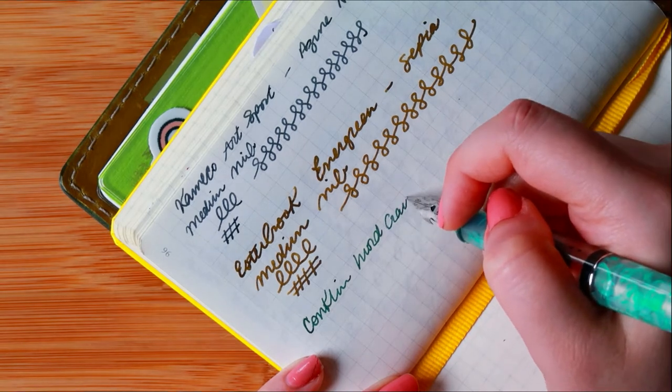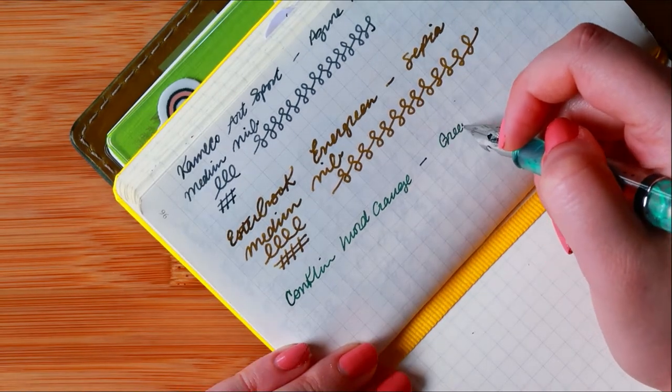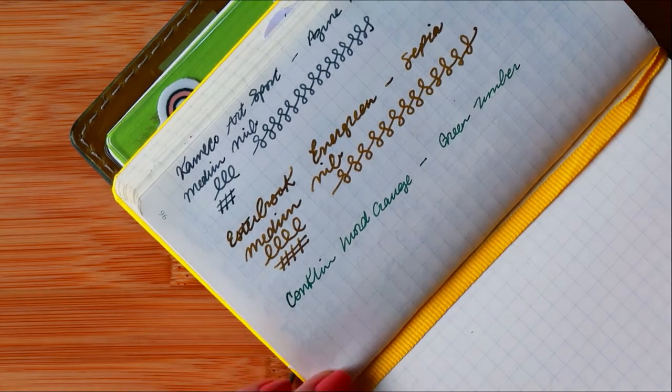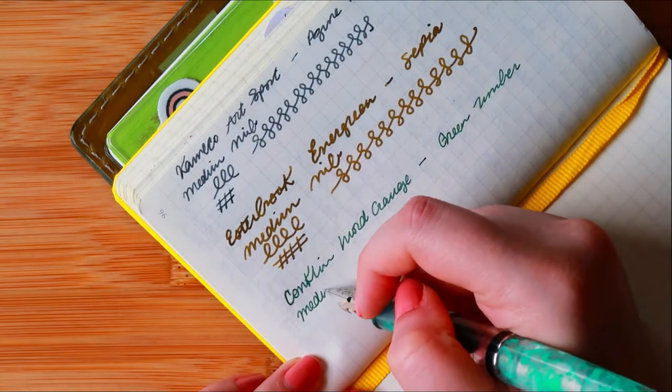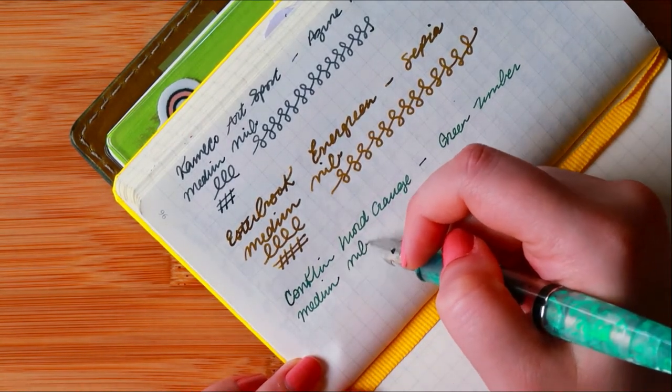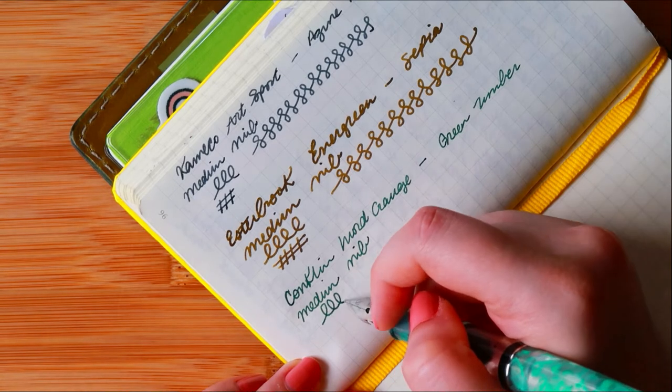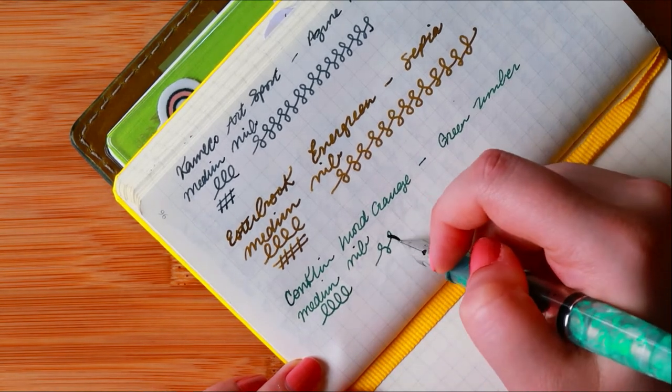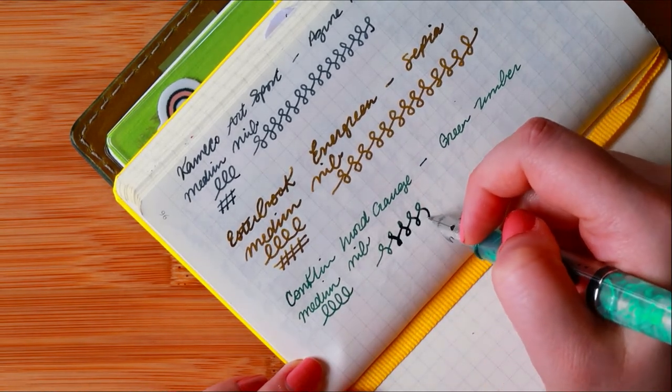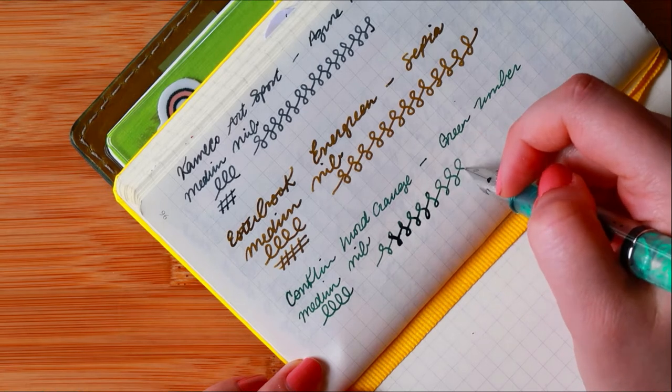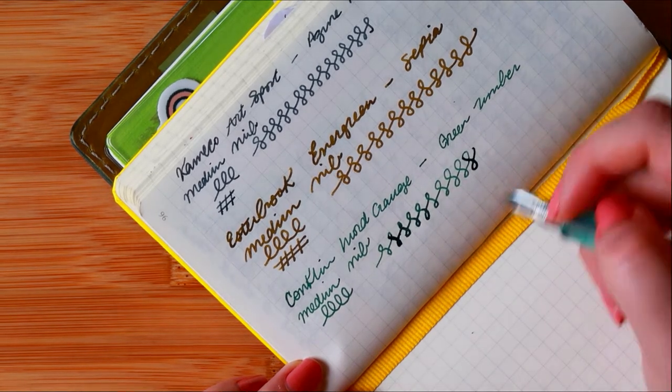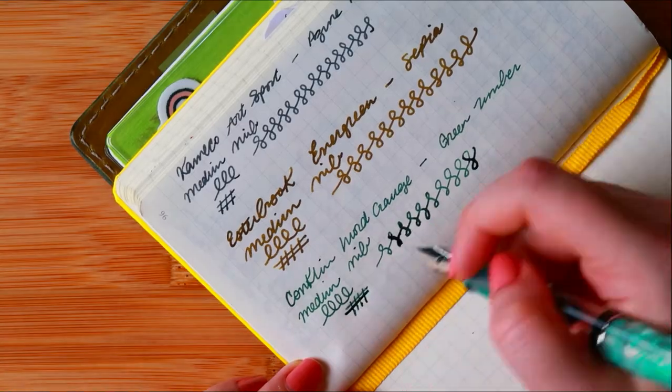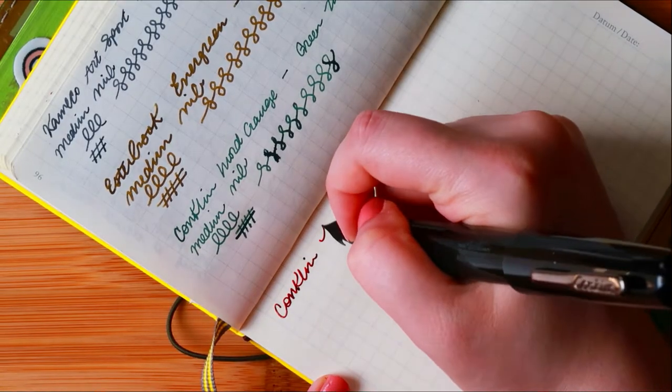That being said, nibs can sometimes be inconsistent. The next pen is a Conklin Word Gauge, and I mistakenly wrote medium nib—it's actually a flex nib. But it's really different compared to the flex nib on the All American. I just don't like it as much. It doesn't write the same way.